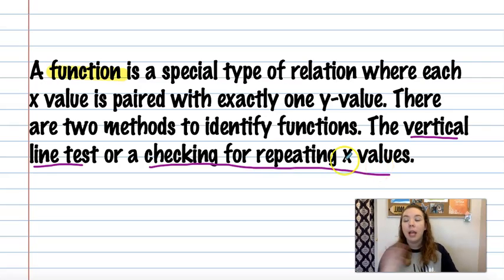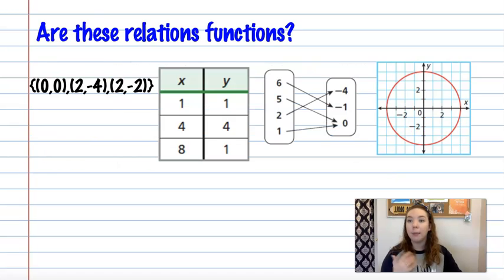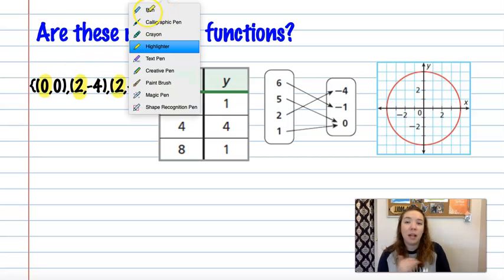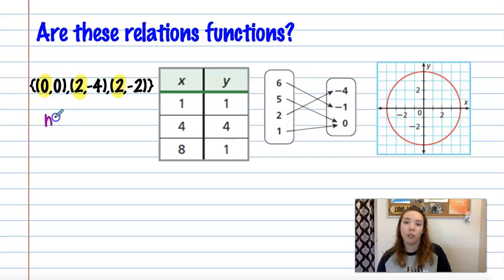So now we're going to go and look at those same four examples we just did on the last slide, two slides ago, and just decide if they're functions. So we already did their domain and range. Now we need to identify if they're functions. So we're going to go ahead and use that second method for the first three, which is just checking if our x's repeat. So if we look here, my x, I use two twice. That disqualifies it. It is not a function.